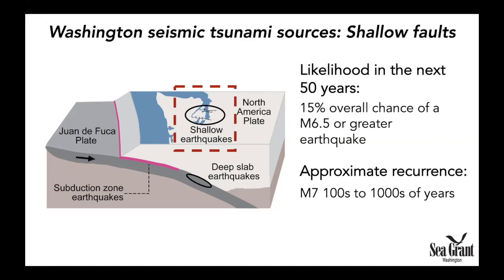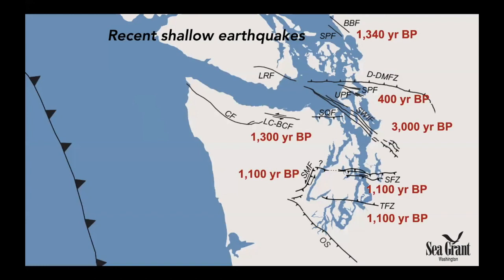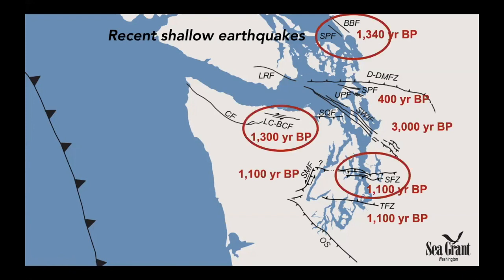An example of one of these faults making a tsunami is the Seattle fault zone. This map shows how long ago the last event on that fault was, and other faults and ages plotted nearby. I've circled ones that we know or are almost completely certain also generated tsunamis. The Seattle fault did, and also interestingly this Lake Creek–Boundary Creek fault, which runs through Lake Crescent, also generated a tsunami about 1,300 years ago. So if you feel a large earthquake, it's not just marine coasts you need to worry about — you need to be away from any large bodies of water.